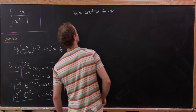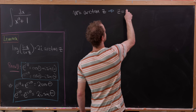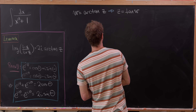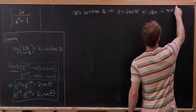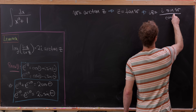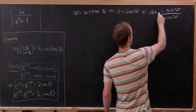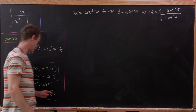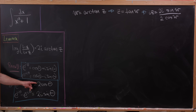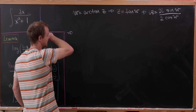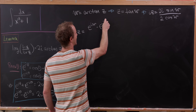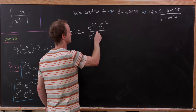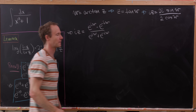Observe that if w equals arctan of z, that means z equals the tangent of w, which in turn means i times z equals i times sine of w over cosine of w. Multiplying by i and also multiplying numerator and denominator by 2, we can express things using the formulas for 2 cosine theta and 2i sine theta in terms of complex exponentials. So i times z equals e to the iw minus e to the minus iw over e to the iw plus e to the minus iw.